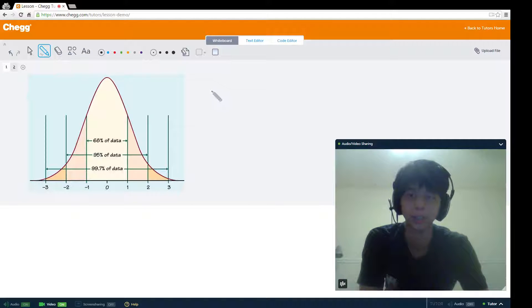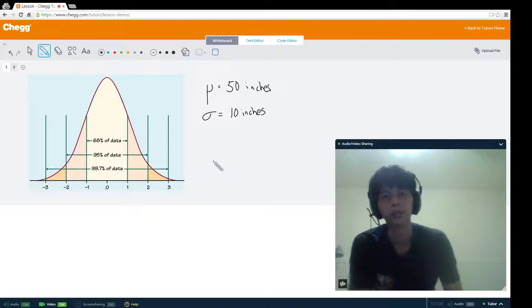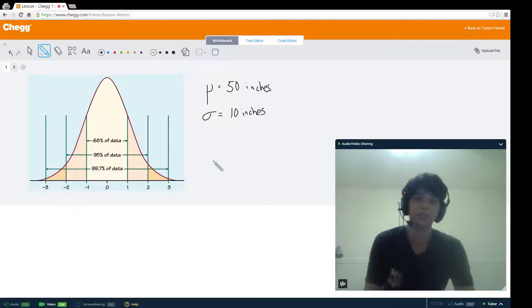Let's say that we know that the population mean μ of this plant is 50 inches. And let's say that we know the standard deviation σ of this population is 10 inches. We're going to cover several types of problems that you can now answer using this information.